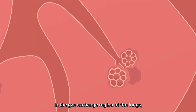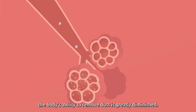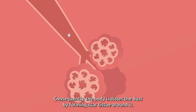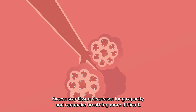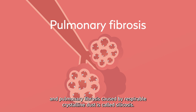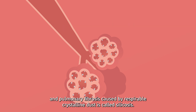In the gas exchange region of the lungs, the body's ability to remove dust is greatly diminished. Consequently, the body isolates the dust by forming scar tissue around it. Excess scar tissue decreases lung capacity and can make breathing more difficult. This excess scar tissue buildup is called pulmonary fibrosis, and pulmonary fibrosis caused by respirable crystalline dust is called silicosis.